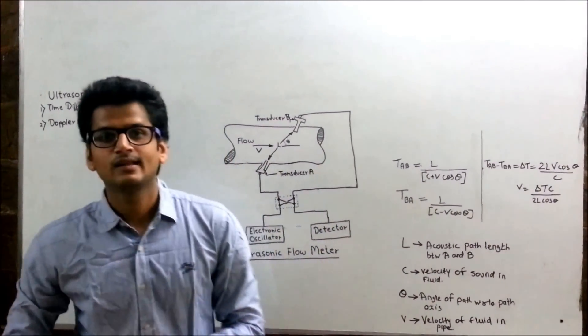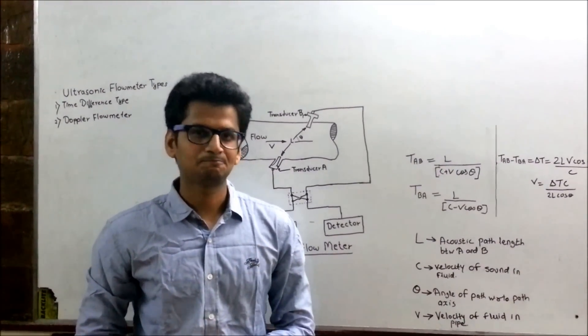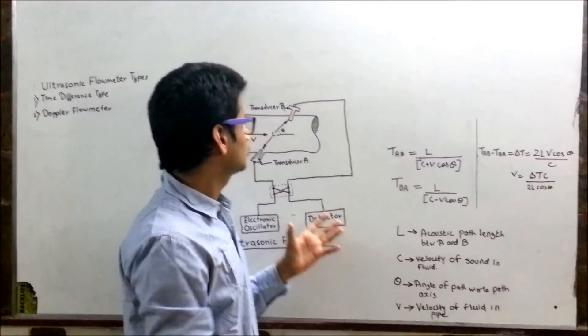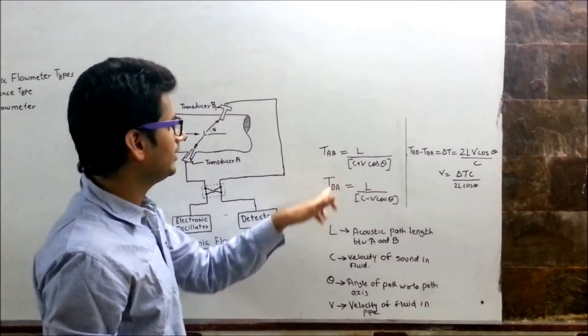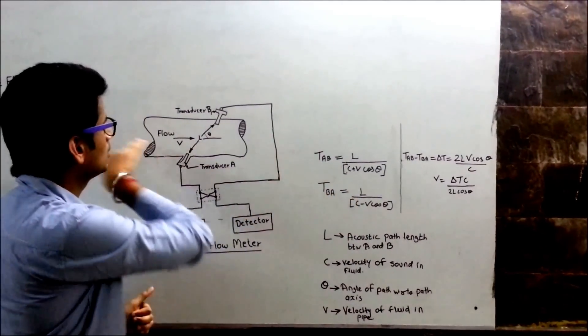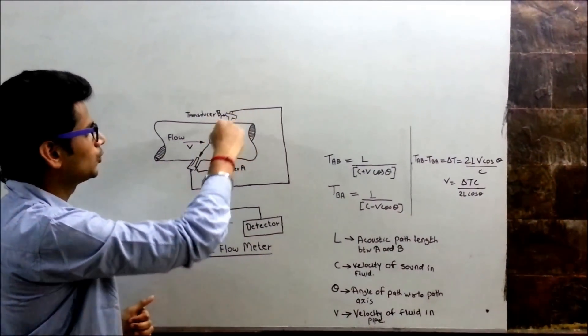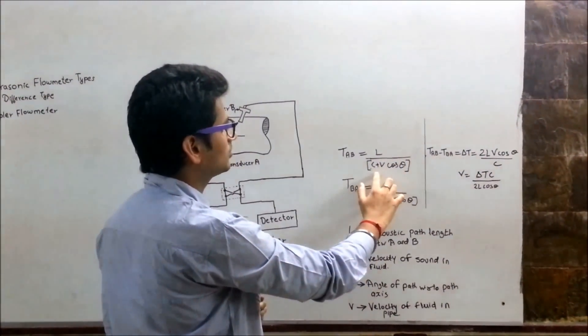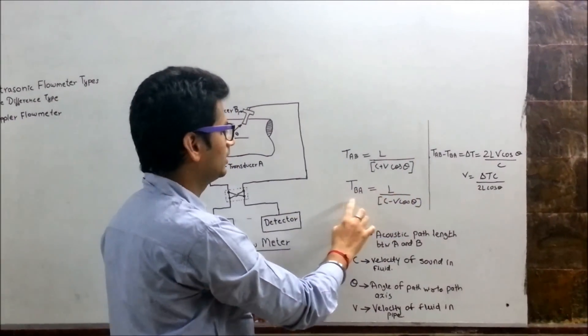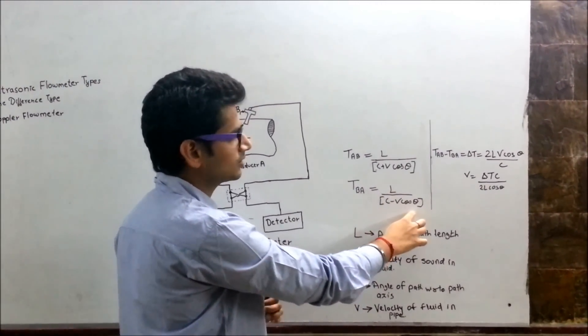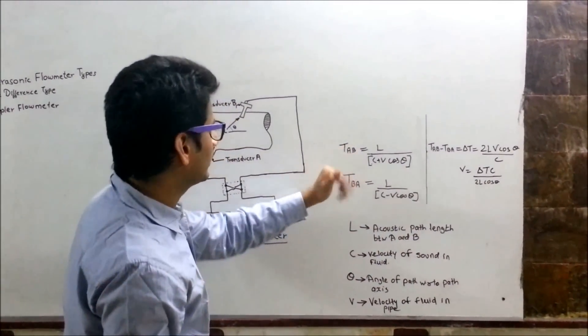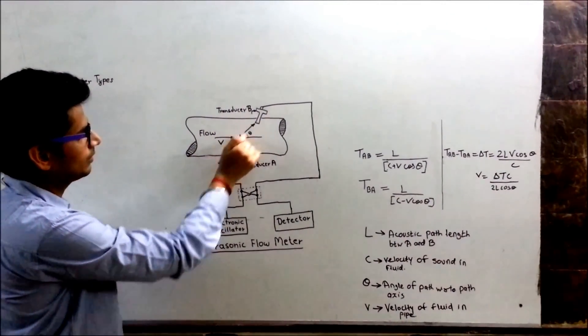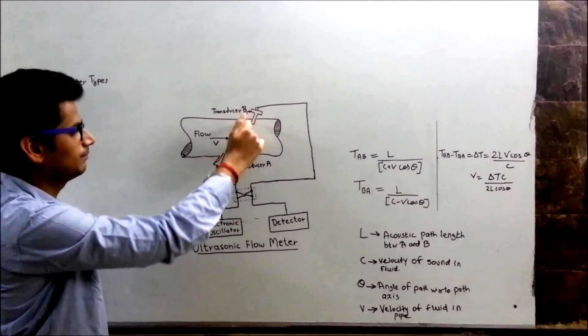As I mentioned earlier, it is based on time difference type, so there has to be some formula. The formula is TAB and TBA - that is the time taken for the fluid to pass from A to B and B to A. TAB is L upon C plus V upon cos theta and TBA is L upon C minus V cos theta, where L is acoustic path. Acoustic path means this path, which you can see, is acoustic path.